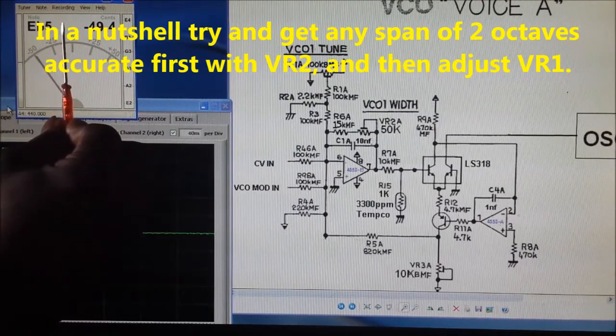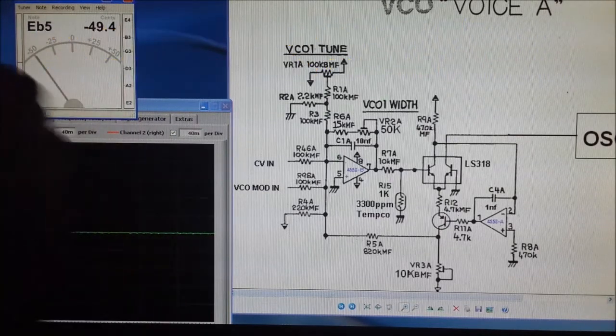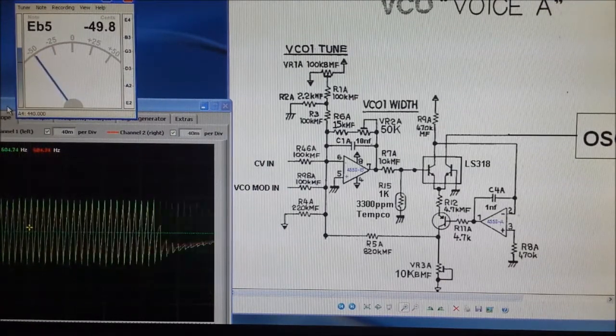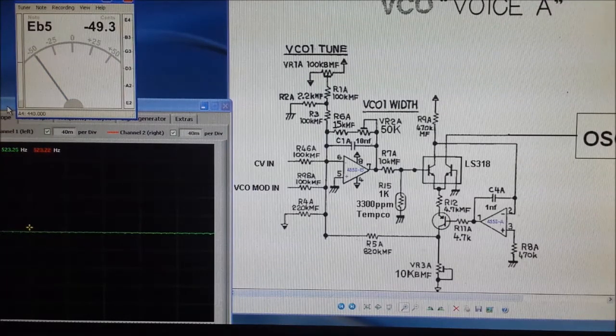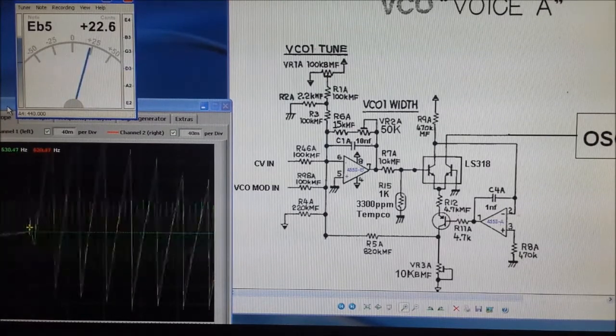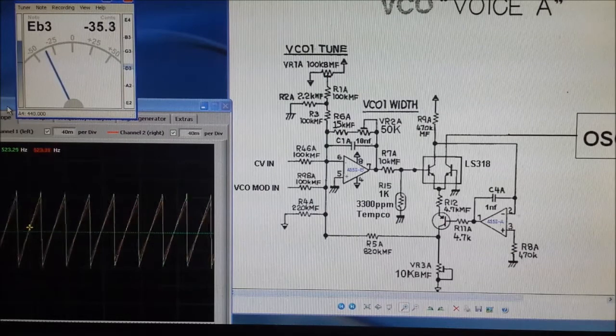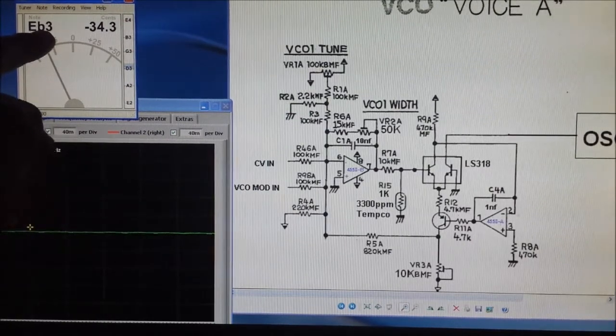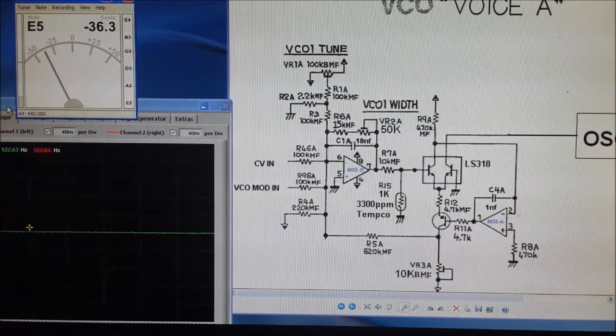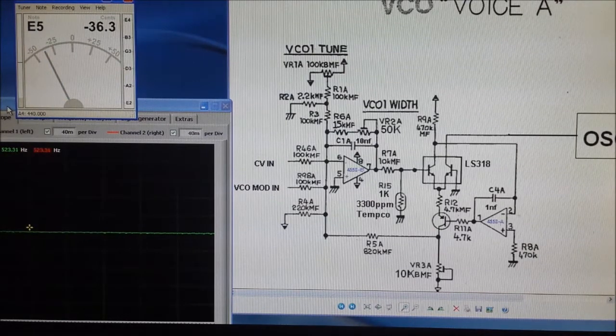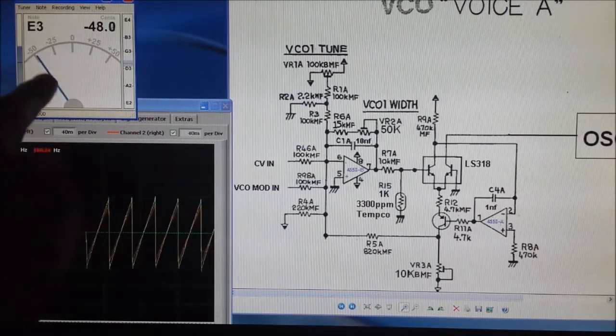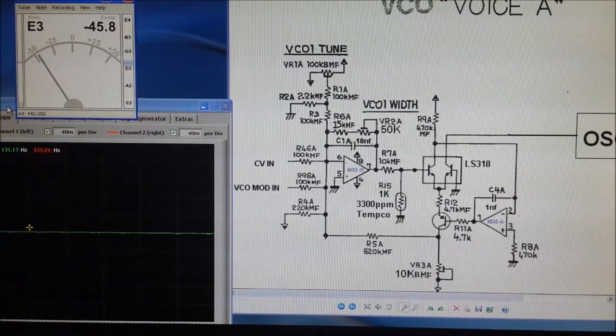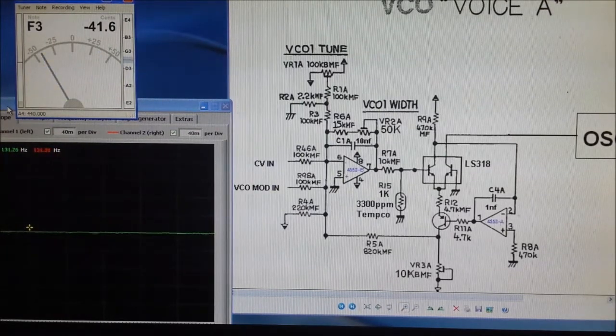Right now I'm just going to make sure our width is adjusted properly. I know it's not adjusted properly, let's take some more off that. We've got two octaves - we're E flat 3 and we're at E5, so I need to trim a little bit more off that. We're getting closer now. We just need to turn VR2 again. We've overshot, let's take that back a little bit.